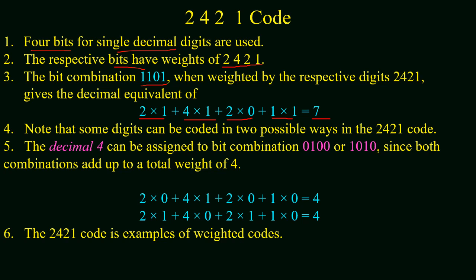Note that using 2421 code, some digits can be coded in two possible ways. Like the decimal 4 can be assigned a bit combination of 0100 or 1010. Here both combinations add up to a total weight of 4. This coding method is also a weighted code.